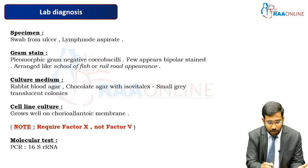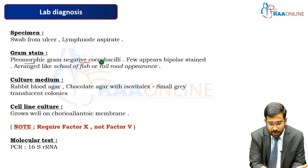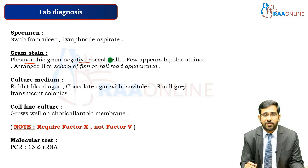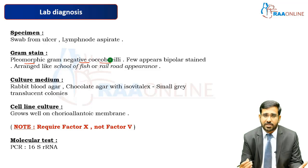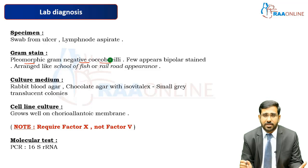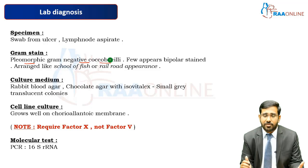The first stain performed is the Gram stain, where we look for pleomorphic gram-negative coccobacilli. The organisms exhibit numerous forms — coccobacilli, long bacilli, and coccobacilli. A few organisms may appear with bipolar staining. The classical microscopic arrangement described is a 'school of fish' or 'railroad' appearance, which is a hallmark feature of Haemophilus ducreyi infection.